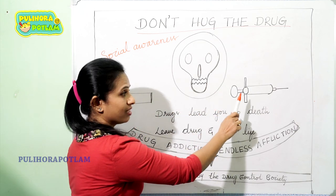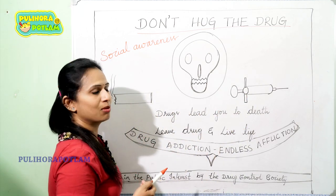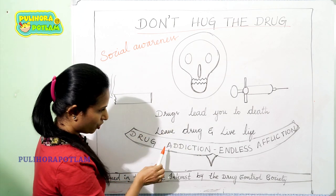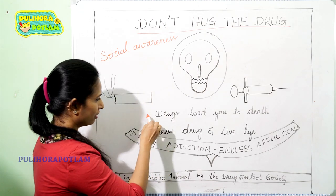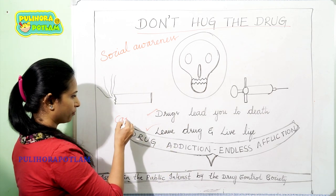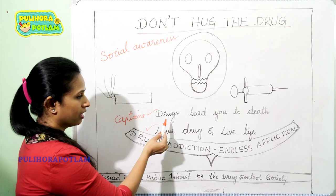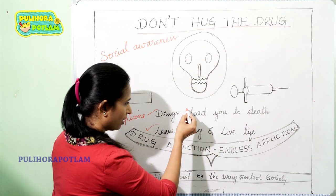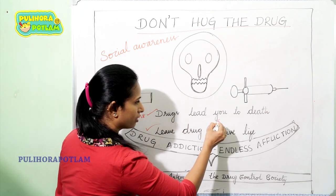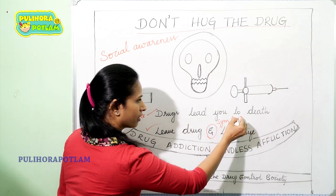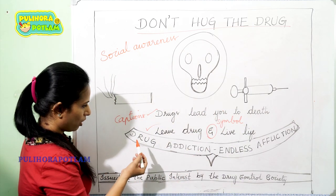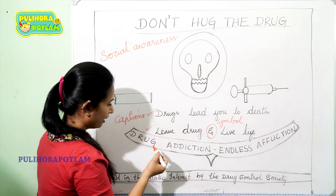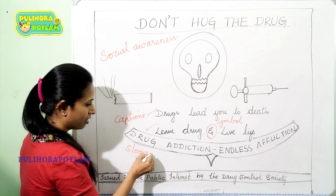We shouldn't smoke and we shouldn't inject drugs into our body. Now coming to the slogans — there are three types of sentences. These two are the captions: 'Drugs lead you to death' and 'Leave drug and live life.' In these two captions, I have used a symbol. Coming to the next slogan: 'Drug addiction, endless affliction.' This is a slogan which has a rhyming.